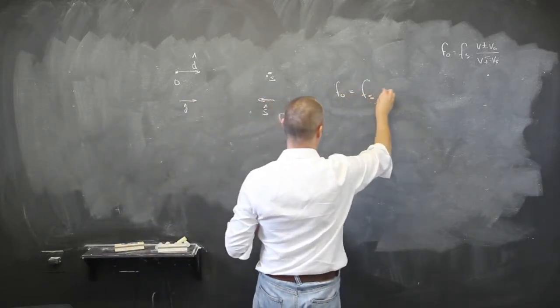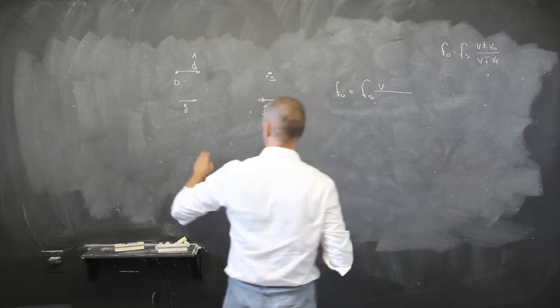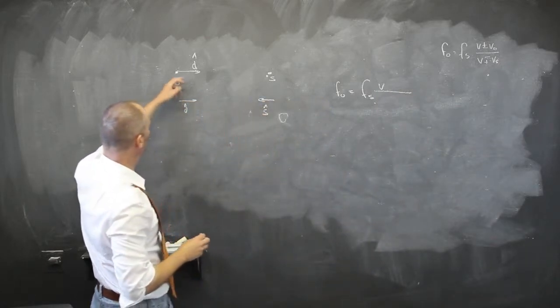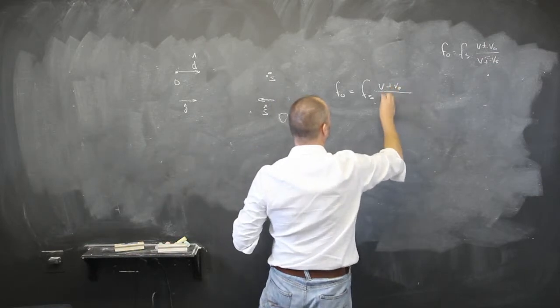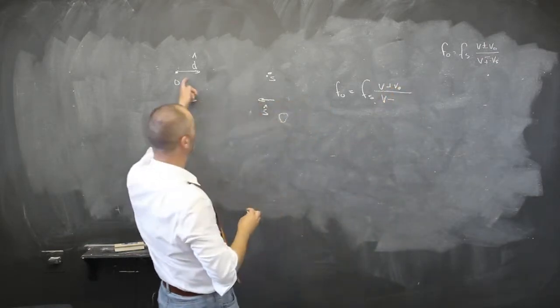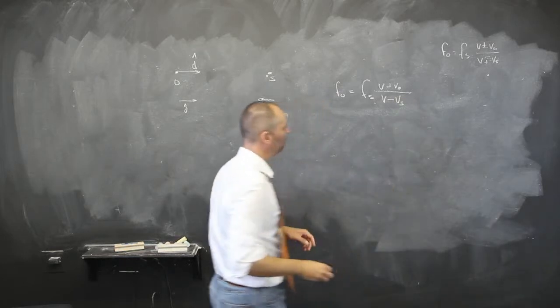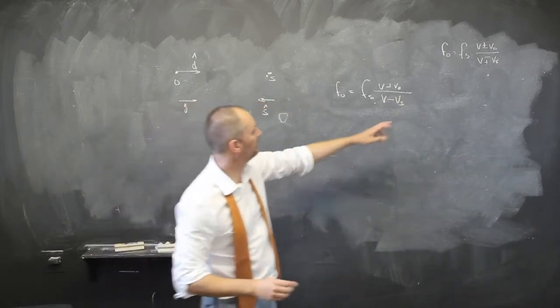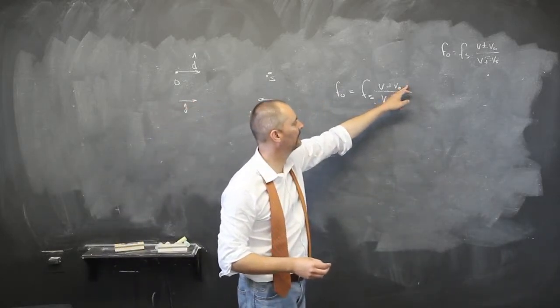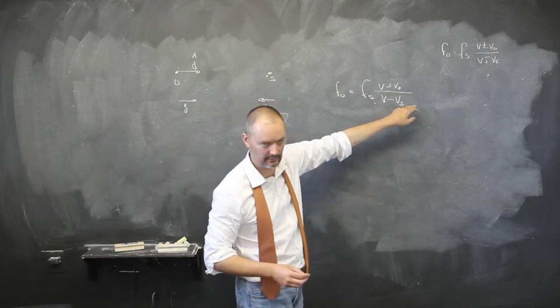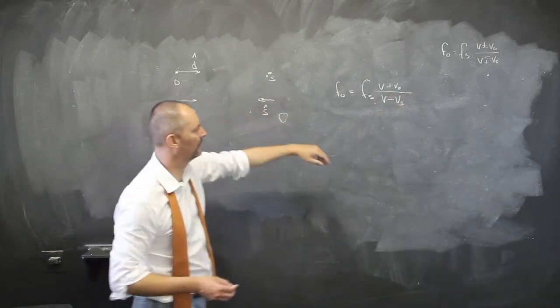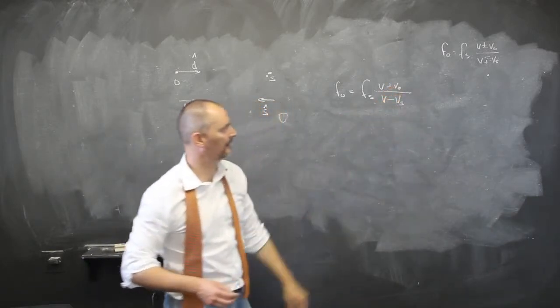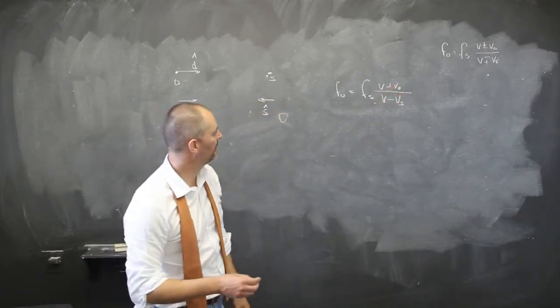It's still going to be the frequency of the source, velocity. The observer is in the same direction, so it's going to be plus V0, and this is in the opposite direction, so minus Vs, which is going to give you an even greater effect, as you're increasing the numerator and you're decreasing the denominator, so it'll be even more obvious as opposed to just one of them being zero.